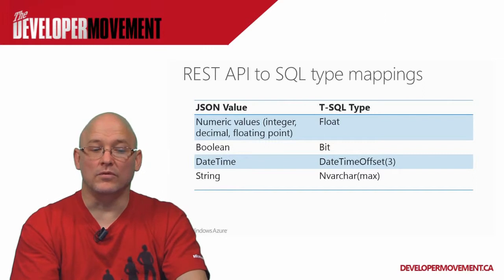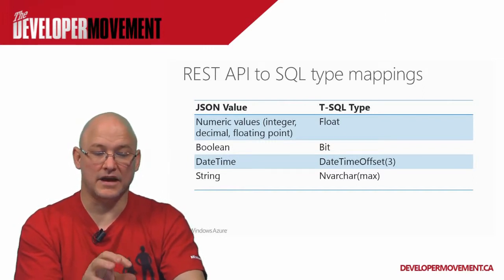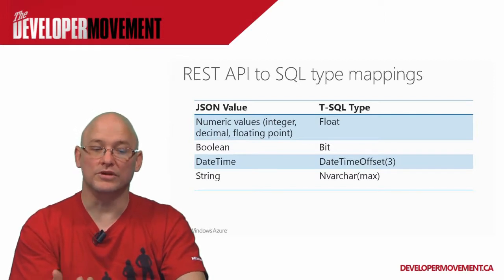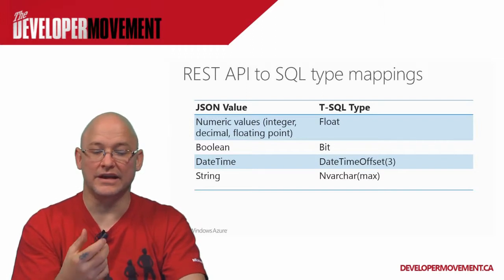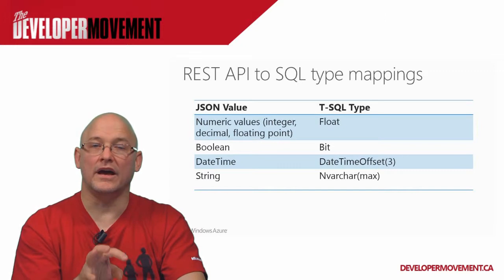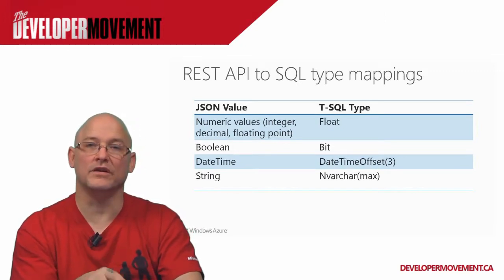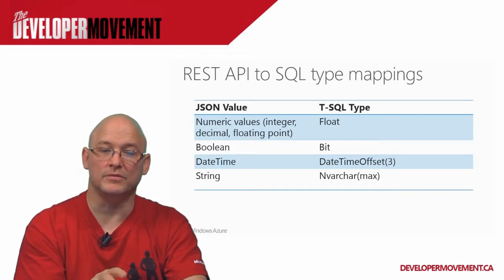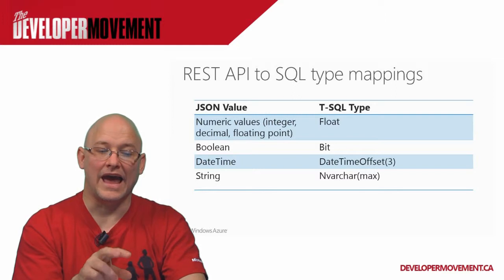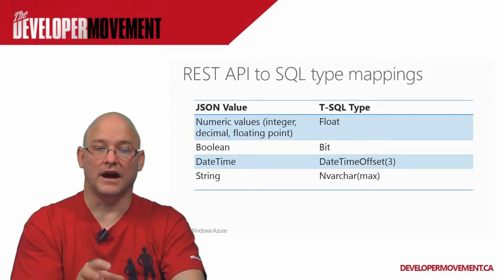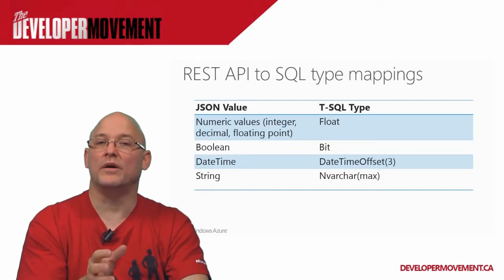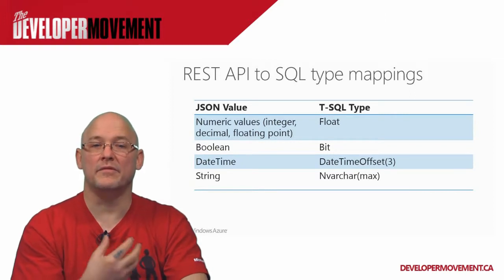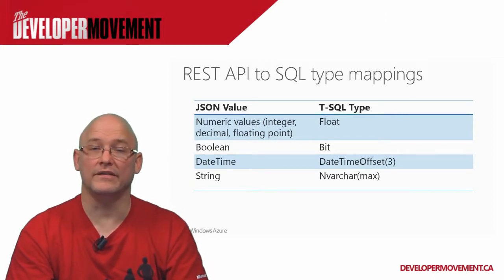Looking at the REST to API SQL mappings: most numeric types are handled under the T-SQL type of float. Booleans are handled by bit. DateTime is a datetime offset of three, and strings are a max varchar. It's a fairly basic mapping that I understand will be expanded and enhanced over the coming months. It's worth noting that Azure Mobile Services is still in preview mode, so things will be changing, including some UI modifications. They've done a good job of documenting it and letting people know where to find things.